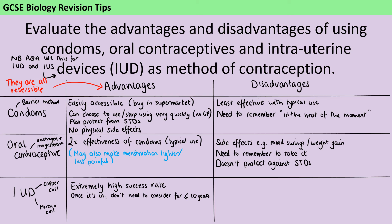Again, we can mention that for the Mirena coil in particular, it often makes periods lighter and less painful. But as with the contraceptive pill, you wouldn't want that to be your only advantage, because this question is specifically talking about contraception and that benefit is not about contraception.